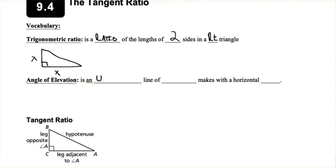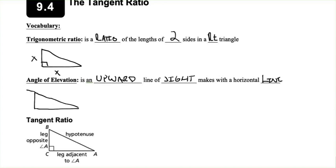An angle of elevation is an upward line of sight that makes with a horizontal line. If you were to walk into the gym and look up at the scoreboard, you would be looking at an angle of elevation. Here's the top of the scoreboard, and you are down at the ground.